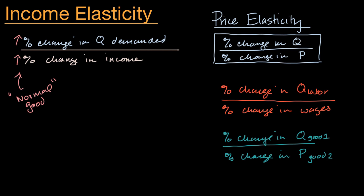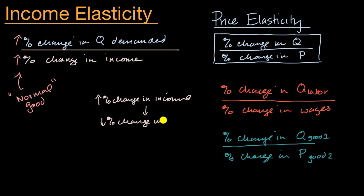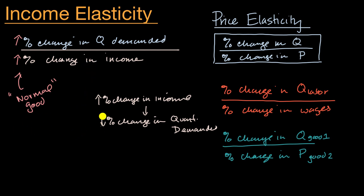But you could actually have the other way around. You could imagine a situation where even though you have an increase in your percent change in income, that does not lead to an increase in your percent change in quantity demanded — in fact, it could lead to a decrease. Your quantity demanded could actually go down, giving you a negative percent change. Imagine the market for car mechanic services: as people have more income, they might afford better, more reliable cars that break down less, so they'd go to the car mechanic less. That situation — where demand goes down when income goes up — is known as an inferior good.